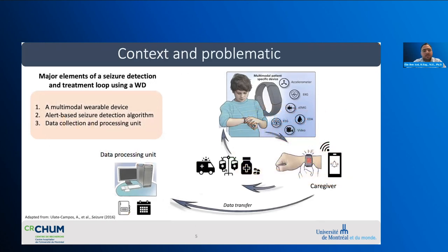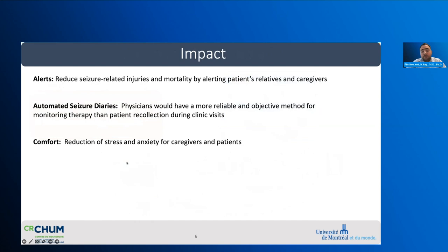Here we can see an illustration of how wearables can be used within the context of epilepsy, adapted from a publication by Ilta Campus and colleagues published in Seizures in 2016. In the proposed architecture, a seizure detection wearable can detect seizures in real time and send alerts to a caregiver or patient's relative, but also transfer the signal to a data processing unit for subsequent analysis. Wearable-based seizure detection would reduce seizure-related injuries and mortality, provide physicians with more reliable automated seizure diaries, and help reduce stress and anxiety for both caregivers and patients.